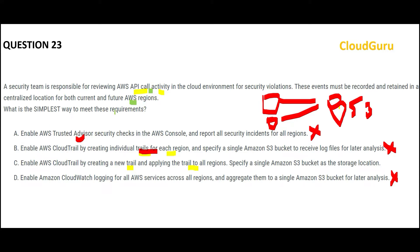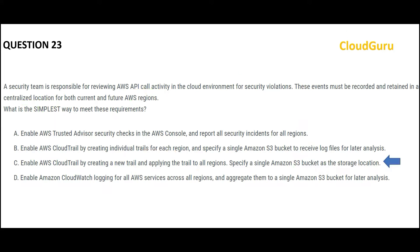Will B work? B can work, but we want the simplest way. If we are asking what is the simplest way, option C is the simplest way. It addresses the requirement of a centralized location, and C addresses the simplest-way requirement. Hence option C is the right answer.